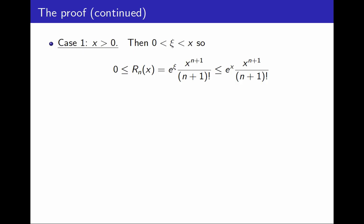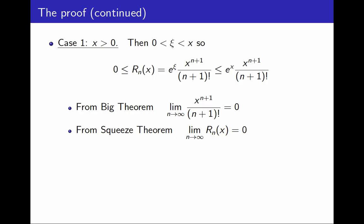I know the limit of that part. From the big theorem, x to the n plus 1 over n plus 1 factorial goes to 0 as n goes to infinity. And therefore, from the squeeze theorem, I can conclude that the remainder goes to 0, because it's sandwiched between 0 and a constant times something that goes to 0. That's it.